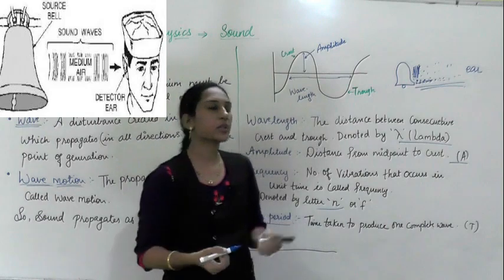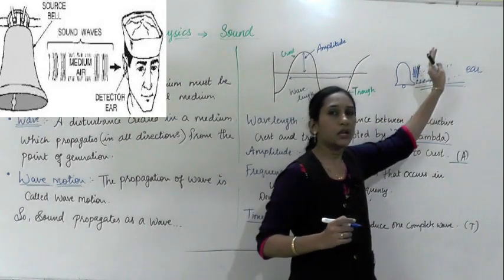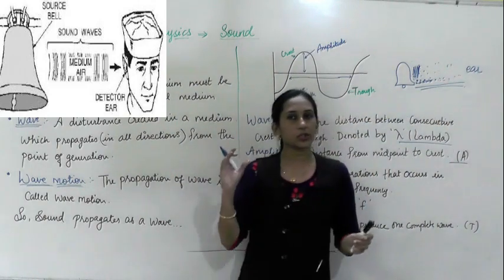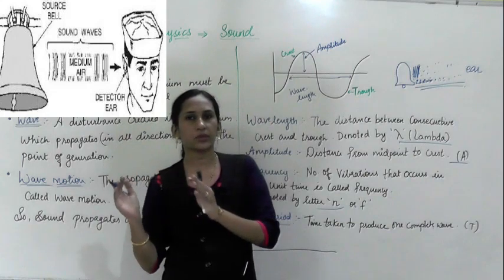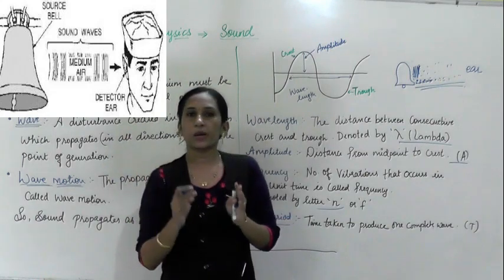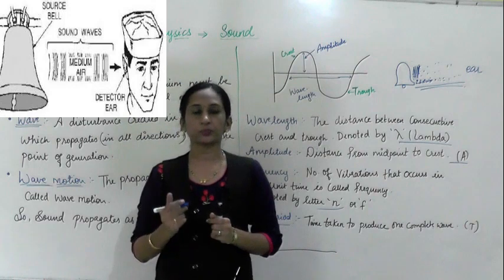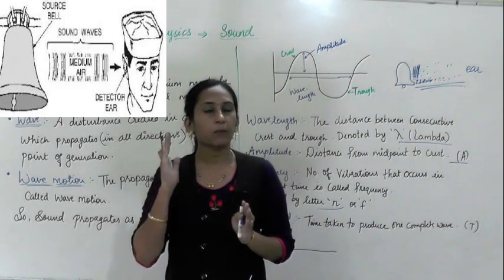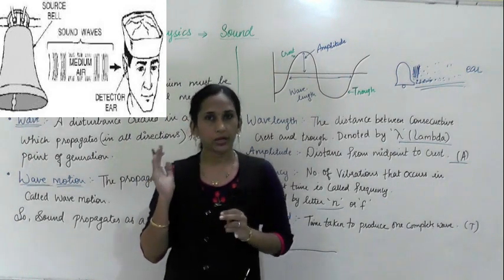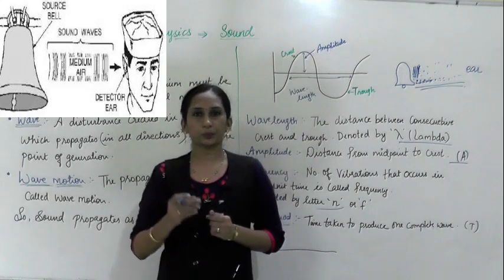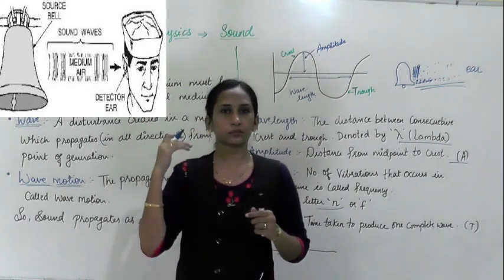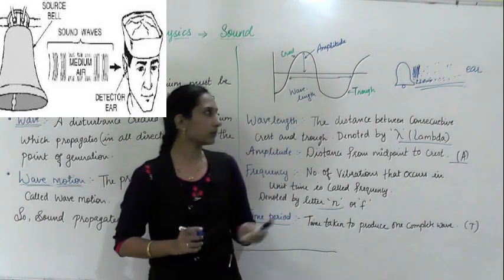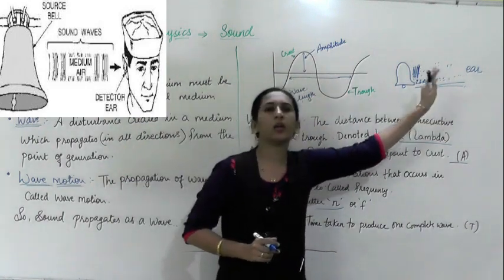The vibration transfers until it reaches our ear. When it reaches our ear, the vibration passes to our ear's diaphragm. When our ear's diaphragm vibrates, the signal is sent to the brain, and the brain recognizes the sound. This is how the propagation of sound takes place.